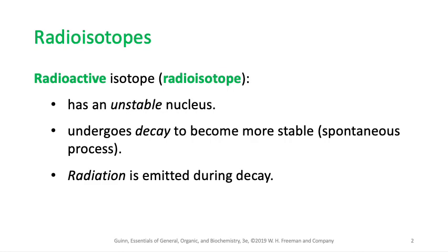Before we talk more about radioisotopes, let me ask you a question. In any chemical reaction, what is the main thing involved? It's the number of valence electrons. Only the electrons present in the valence energy level of the atom take part in most chemical reactions.